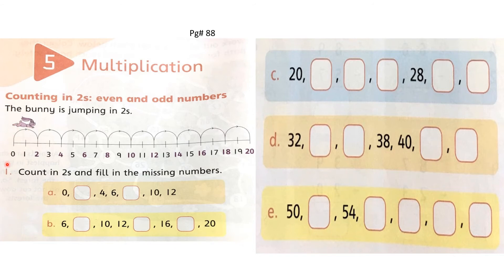Start jumping from 0. Where bunny will go? Yes, skip next number 1. Bunny will land at number 2. Write answer here. Number 2. Next, bunny will go at number 4. Then 6. Next, bunny will land at number 8. So, right answer 8 here. Then it will go at number 10, then 12. These are already written here.